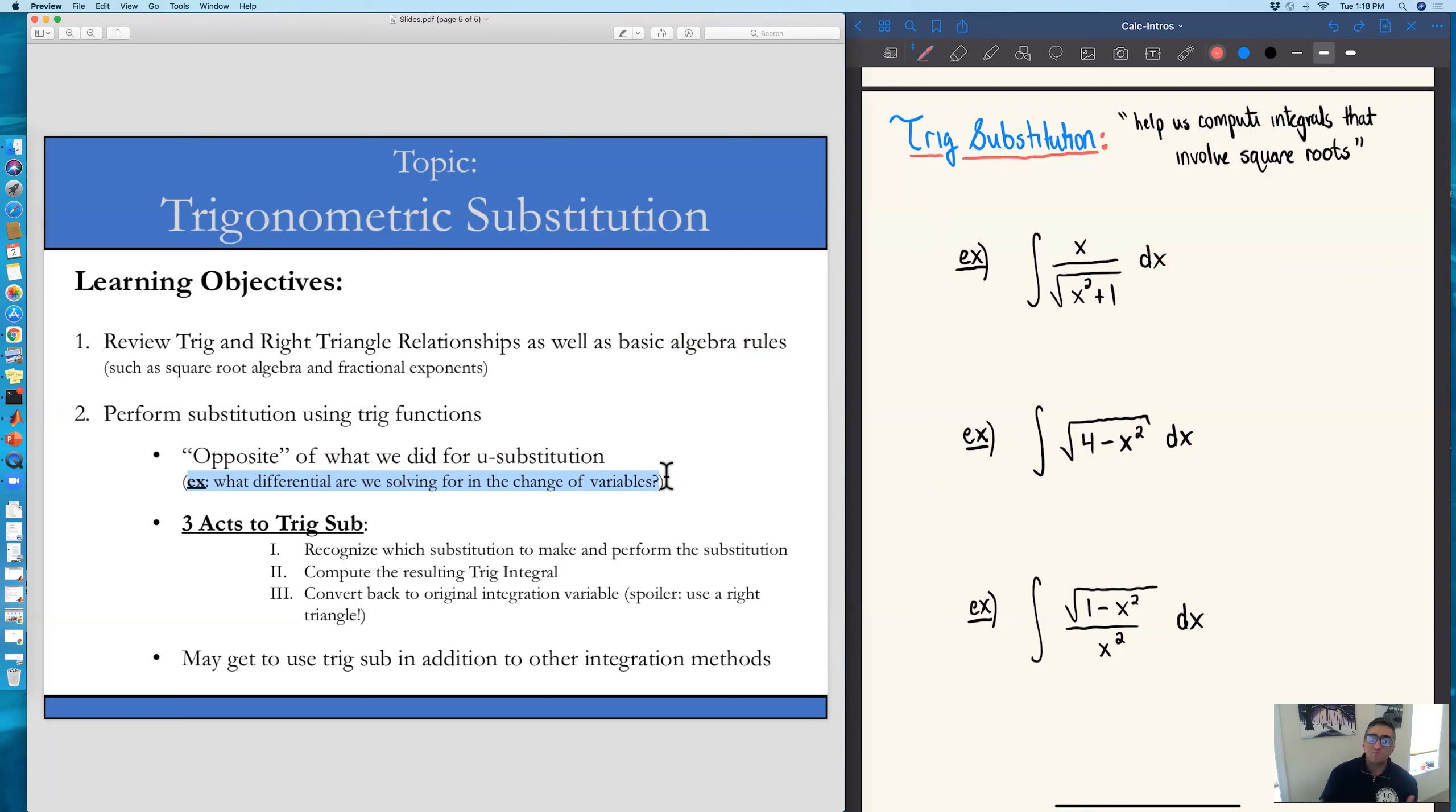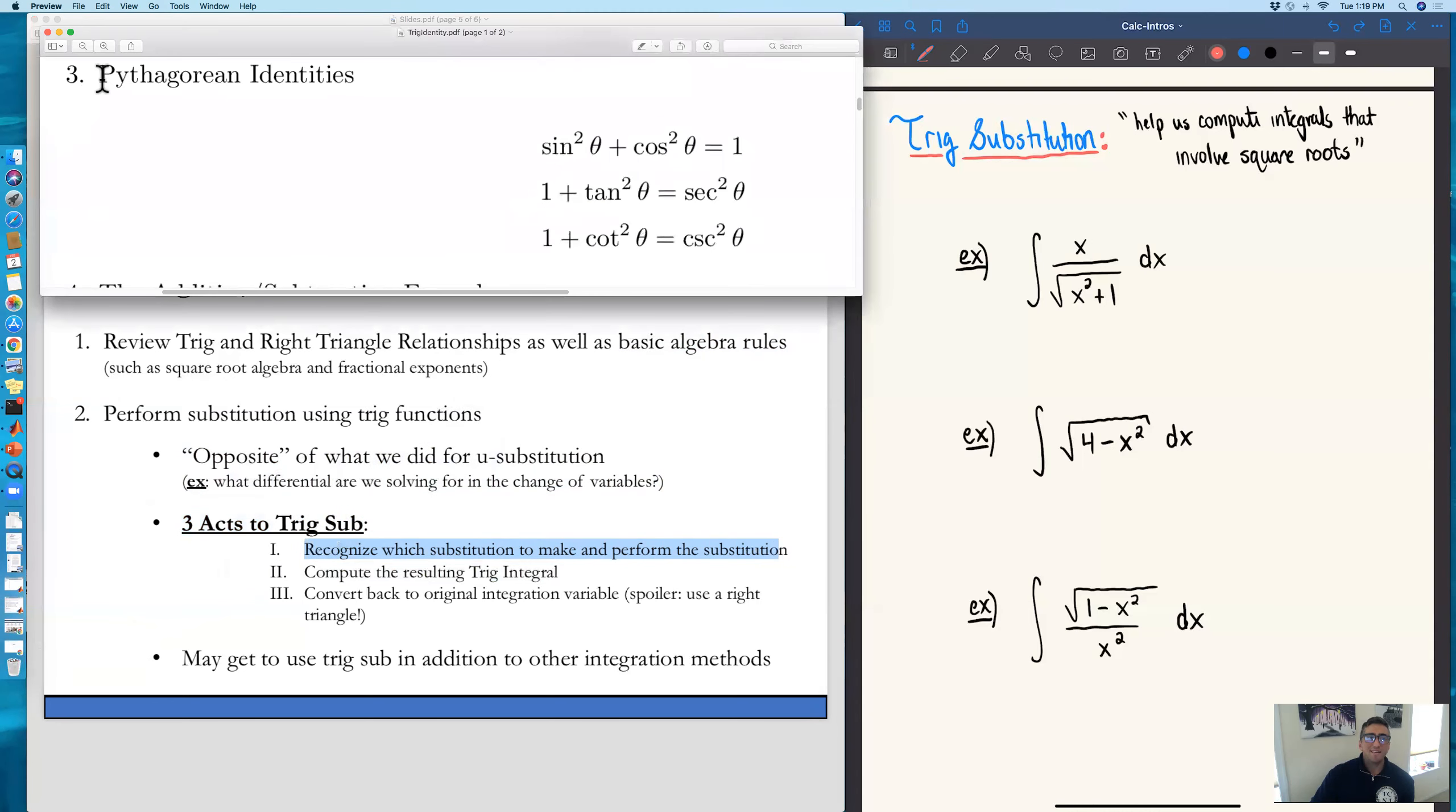And the reason why these problems feel a bit longer than the integrals we've been doing, there's kind of three big parts to trig sub. The first part is we just need to recognize what substitution to make and actually perform that substitution on the original integral. And the long and the short of it, what's going to help us out are trig identities. Namely, the trig identities that involve those Pythagorean relationships.